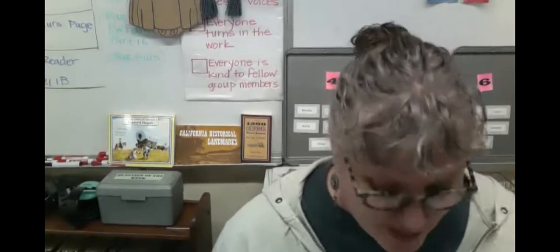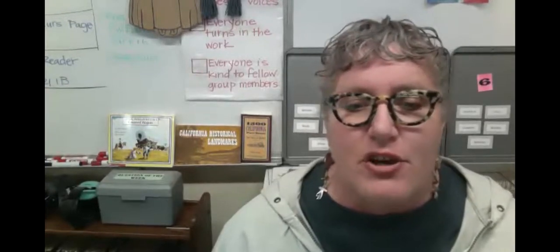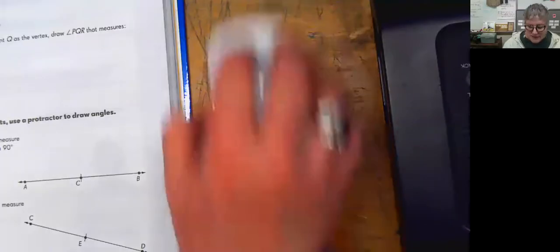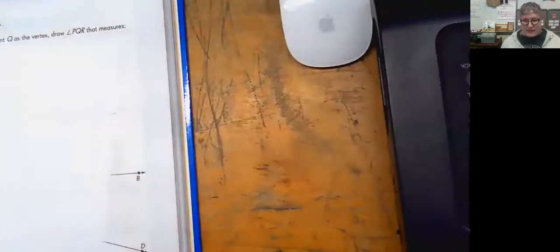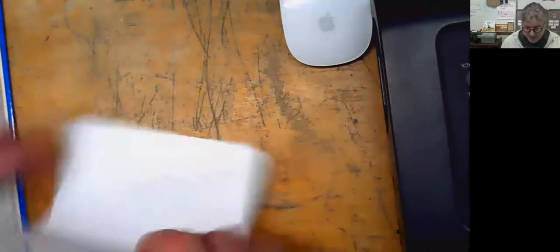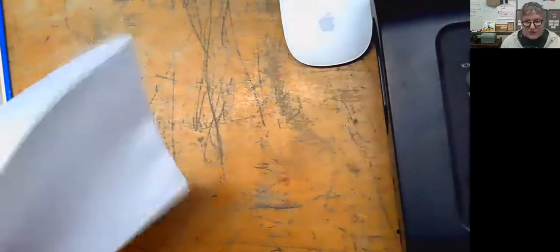I'm going to fold my paper into four squares because I want to have a little bit of room. When you're drawing angles, you kind of need a little bit more room. I'm only folding it into four, and I'm going to use the square that has my name on it so I don't waste that little square.